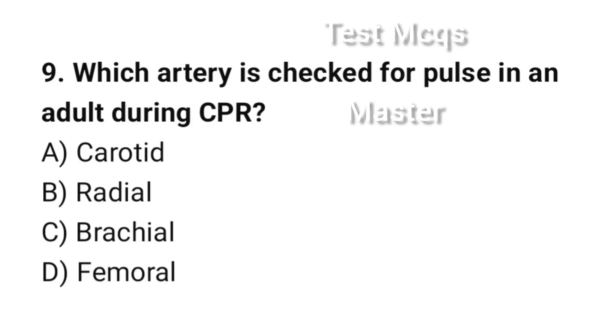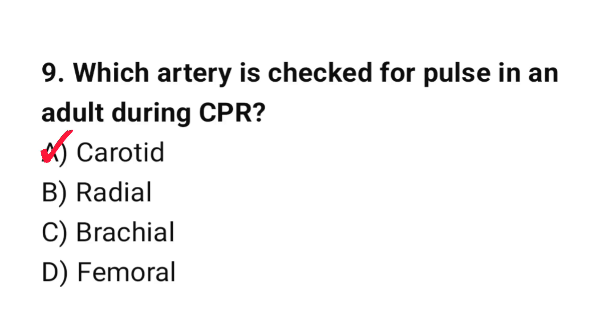Question number 9: Which artery is checked for pulse in an adult during CPR? The correct option is A: Carotid.